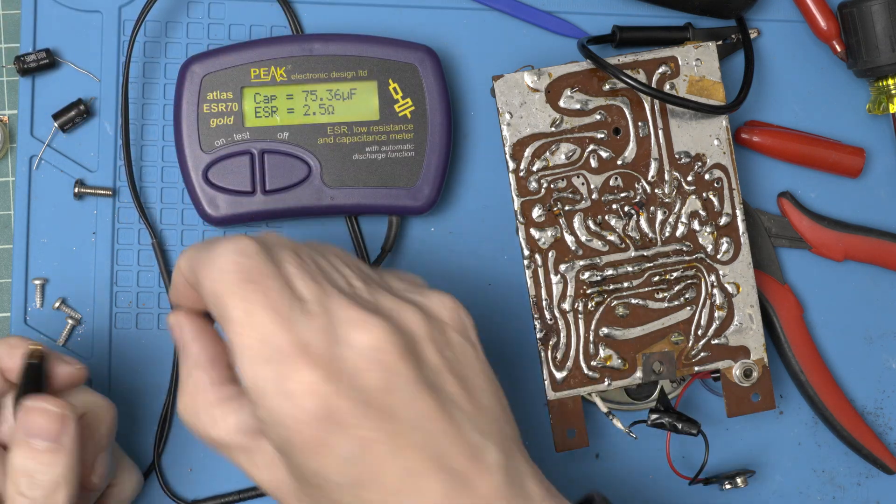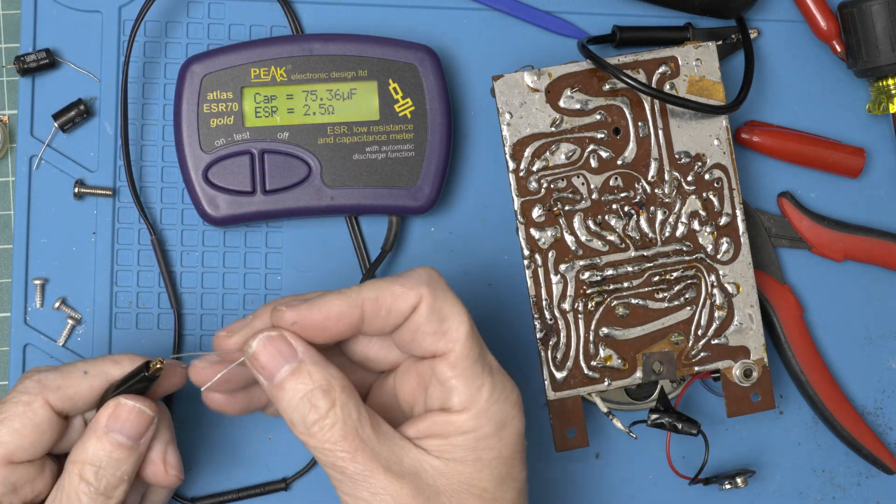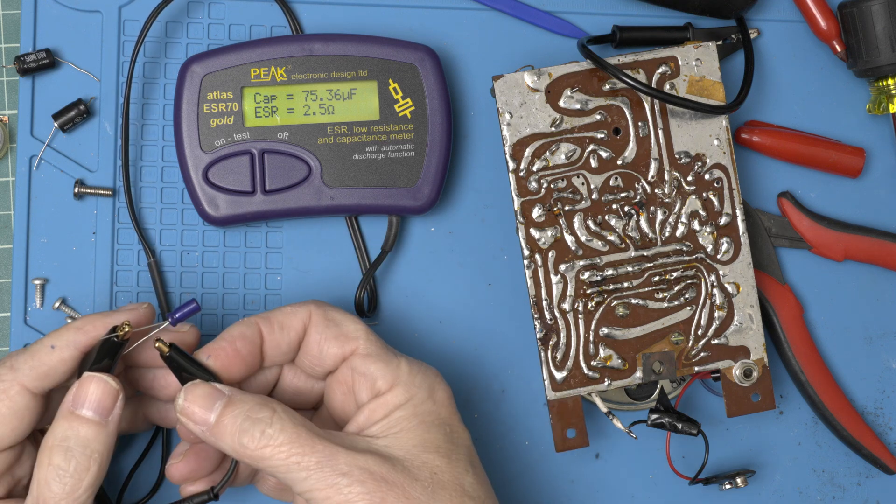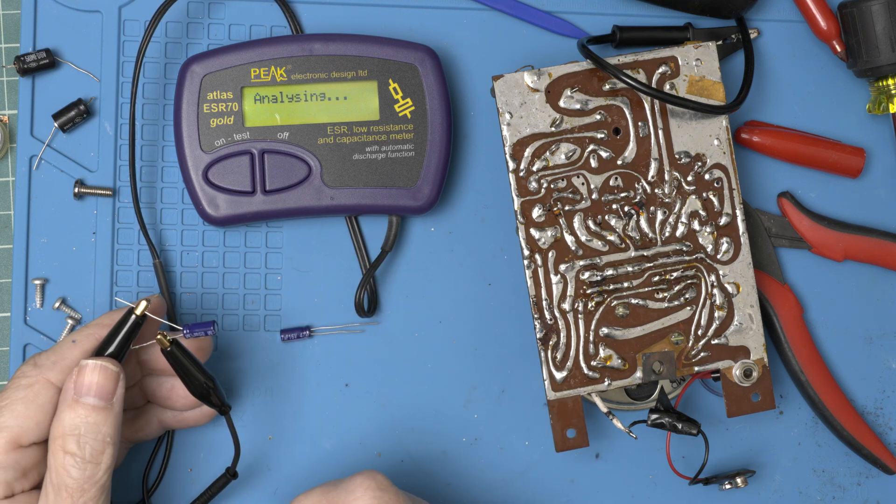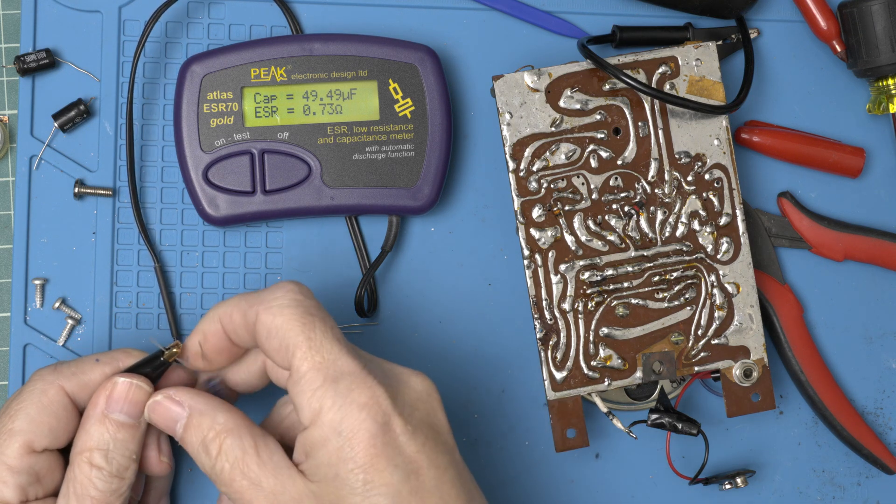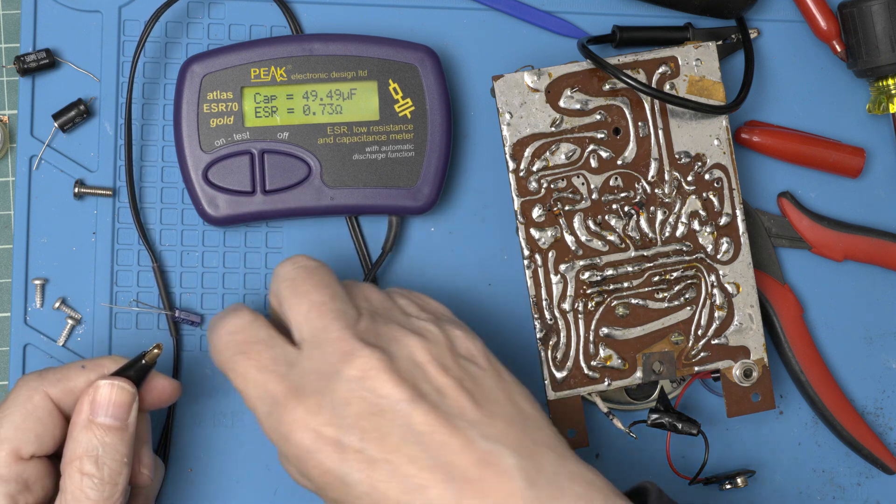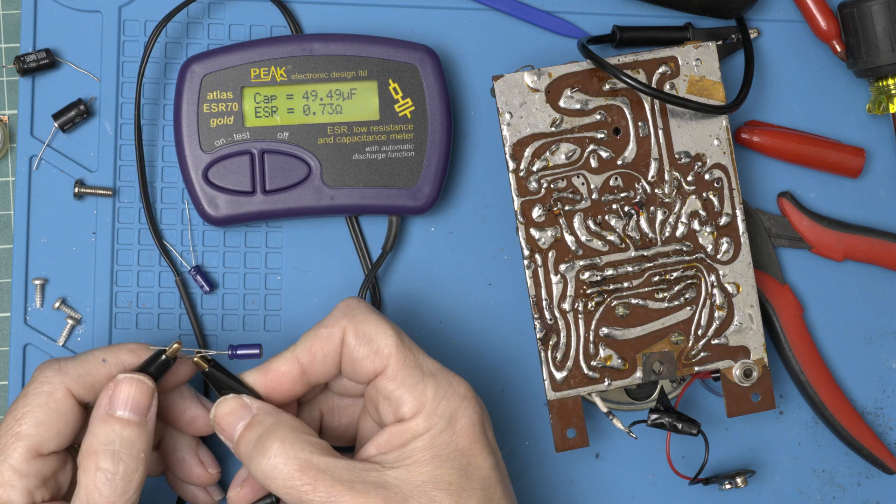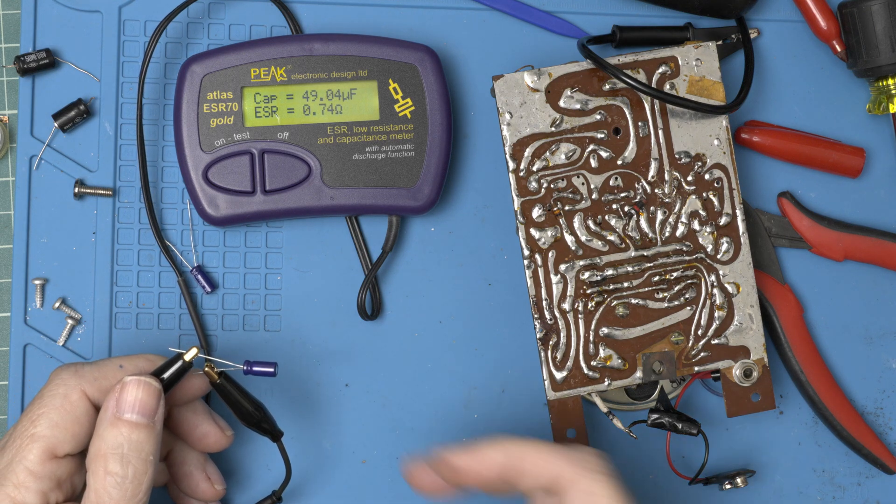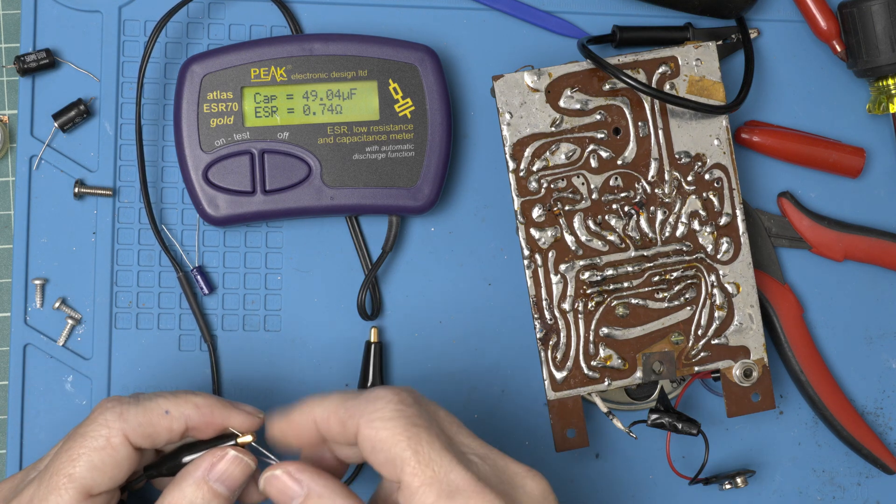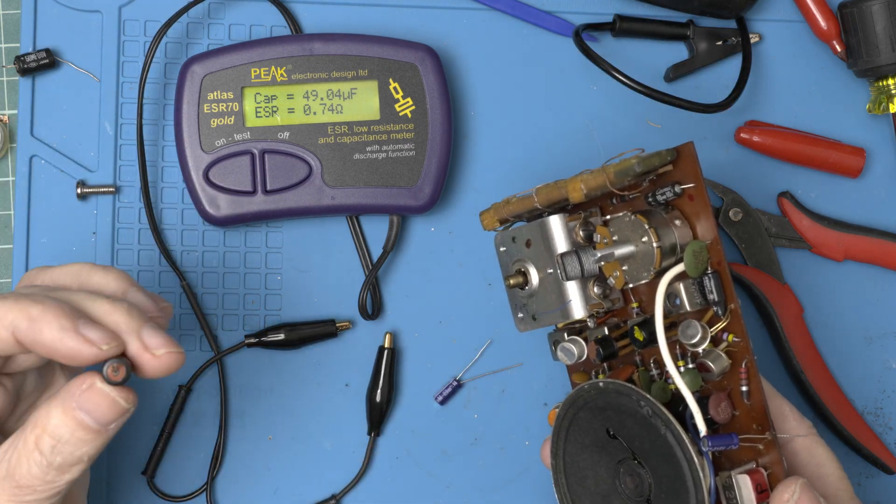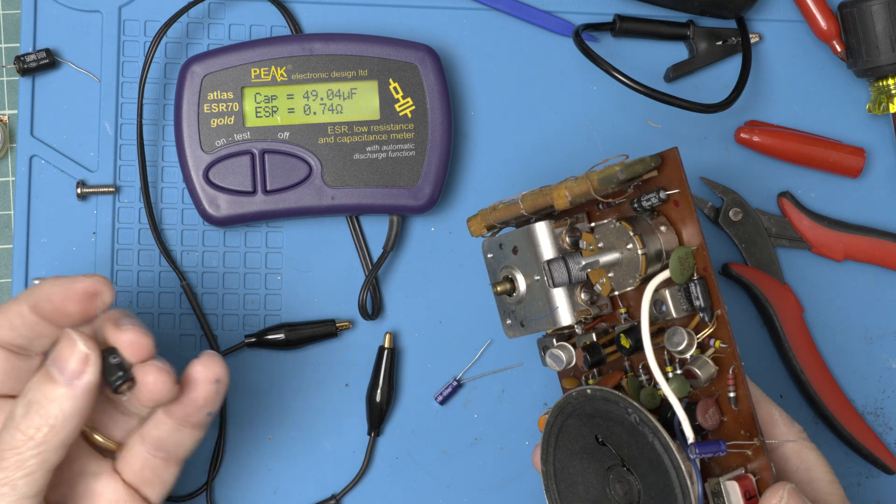And what we're putting in is 49.49. Very close match. And 49.04. I suspect this was not our problem, but they were going to fail eventually. So let's get them in.